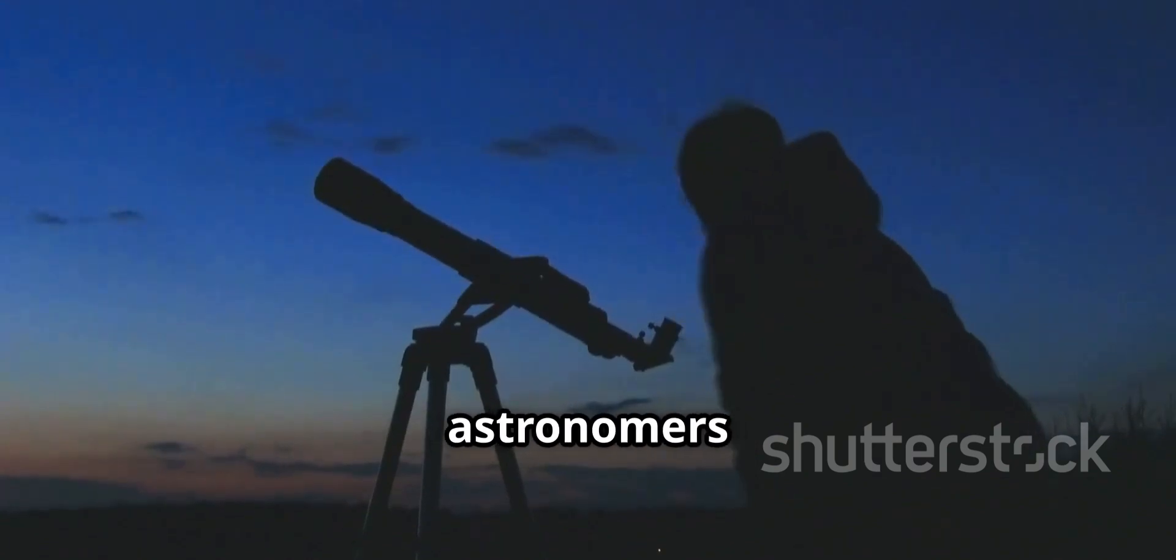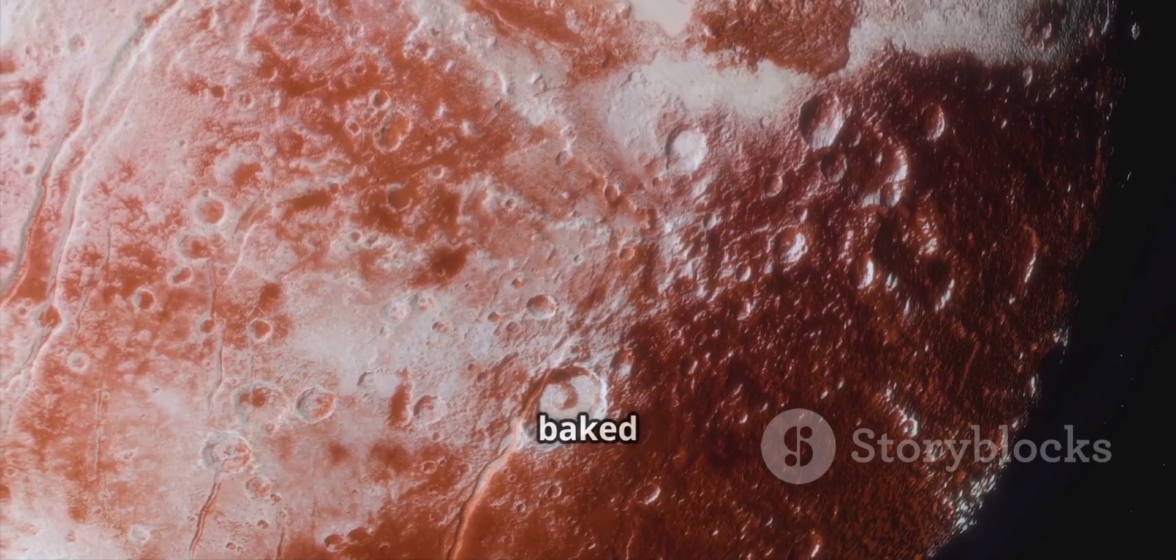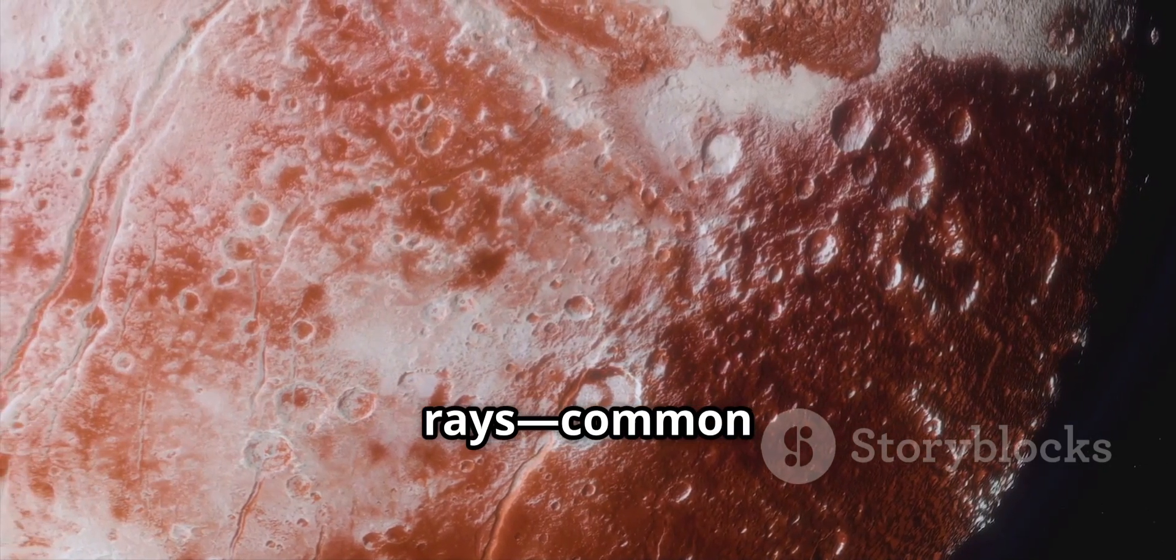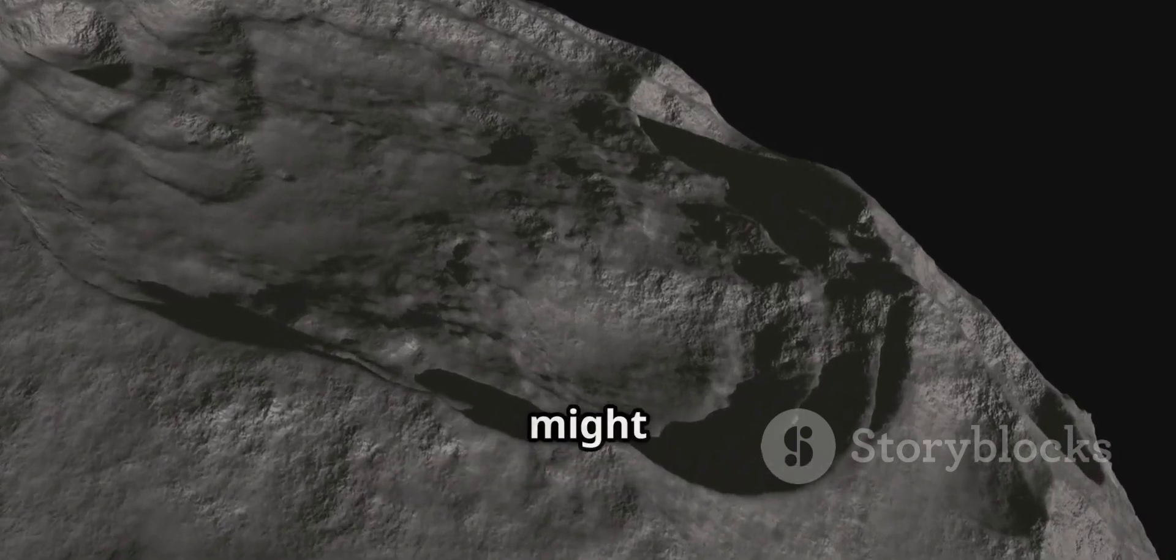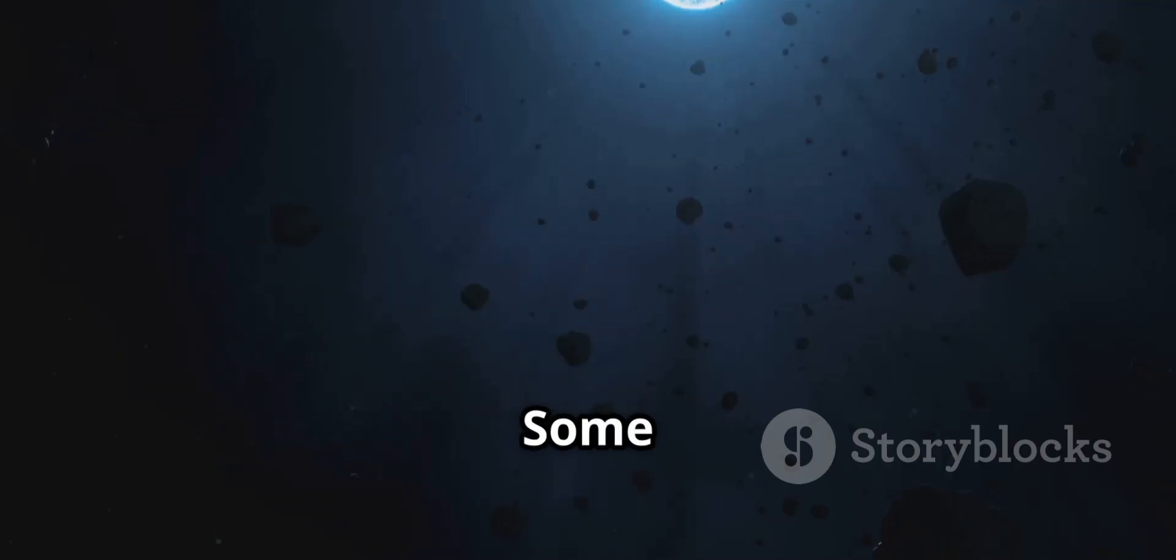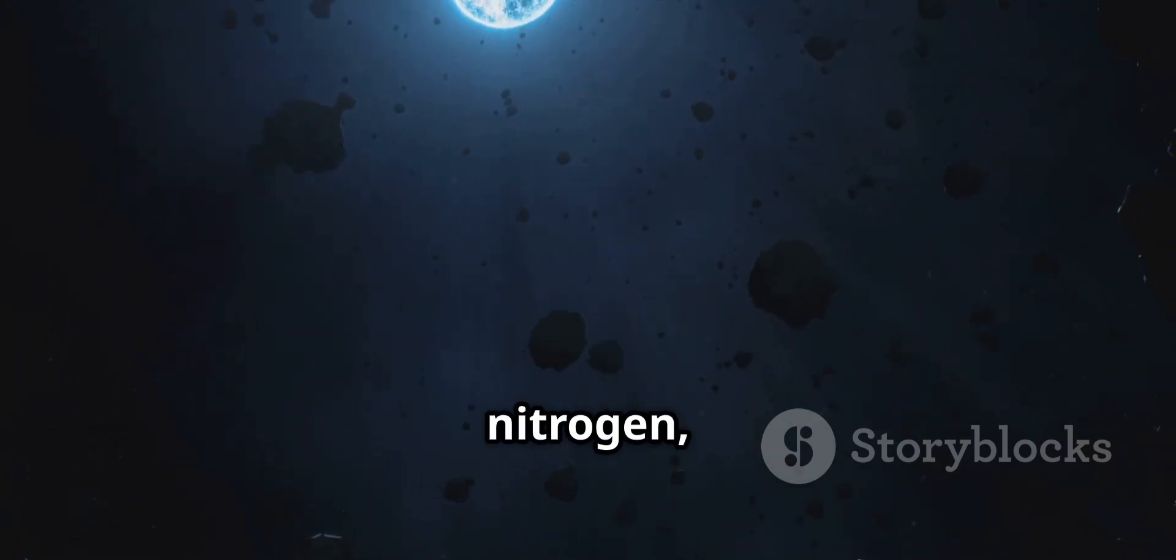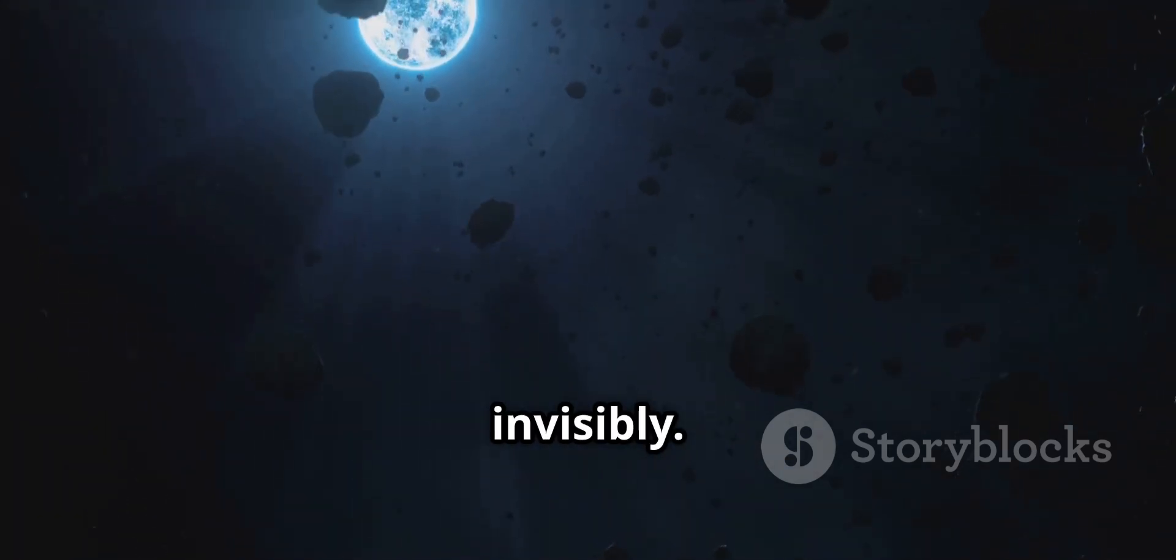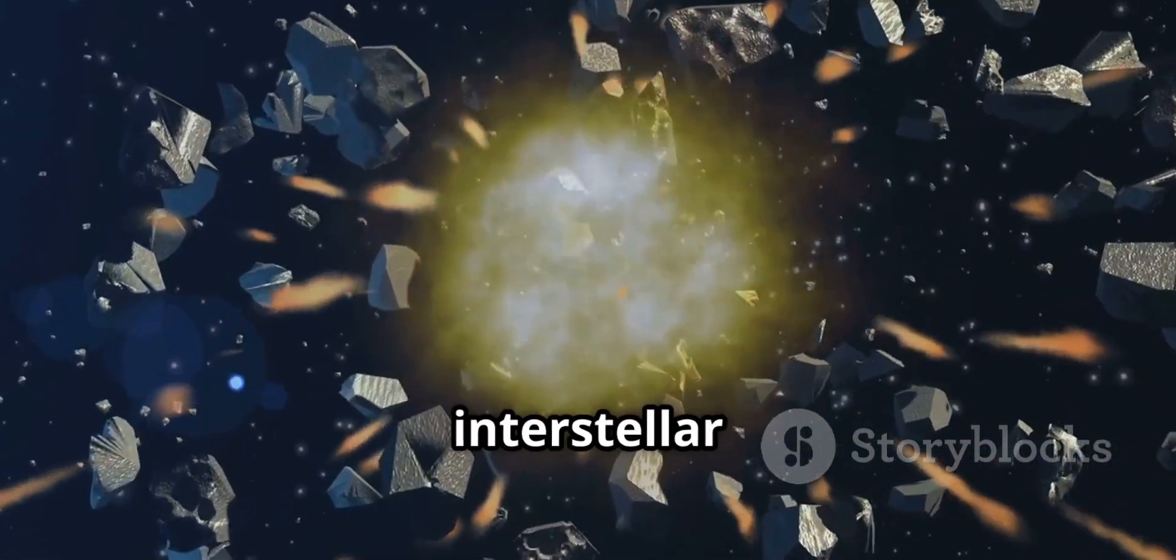With no samples, astronomers relied on the light reflected from 'Oumuamua's surface. Its reddish hue suggested a surface baked by cosmic rays, common for ancient objects from the outer solar system. This weathered crust might have trapped any ices beneath, preventing outgassing near the sun. Some proposed it could be made of exotic ices like hydrogen or nitrogen, which would outgas invisibly. But such objects would be fragile and unlikely to survive a long interstellar journey.